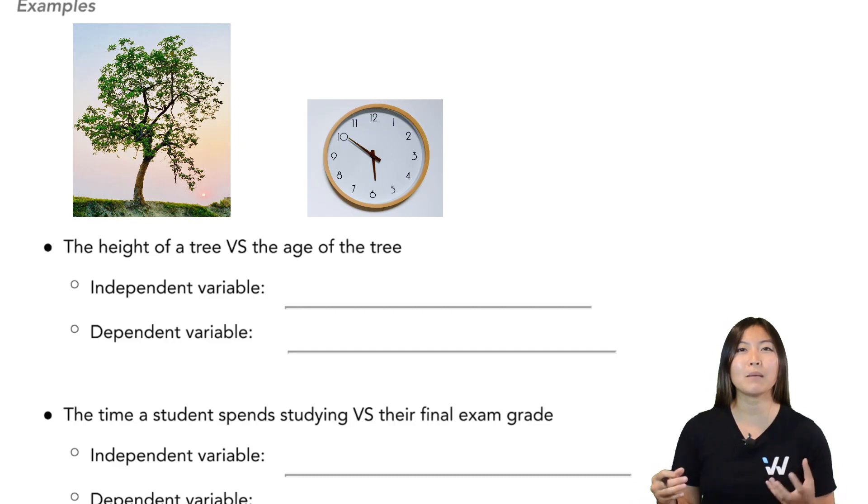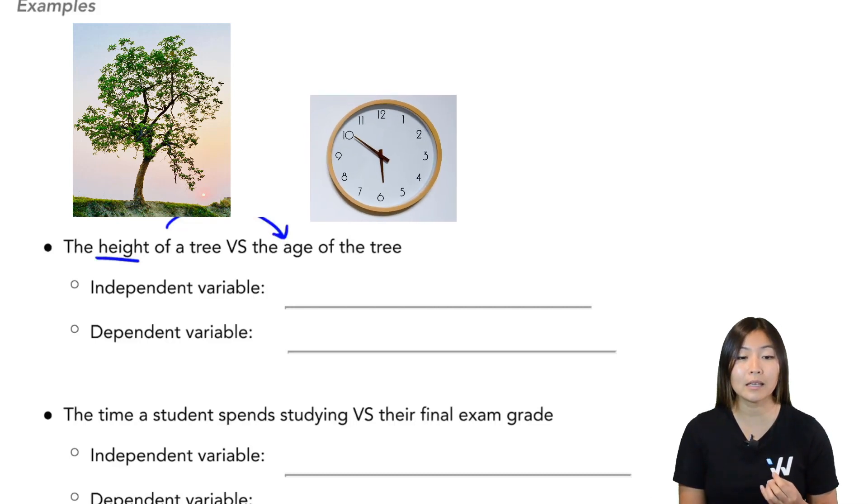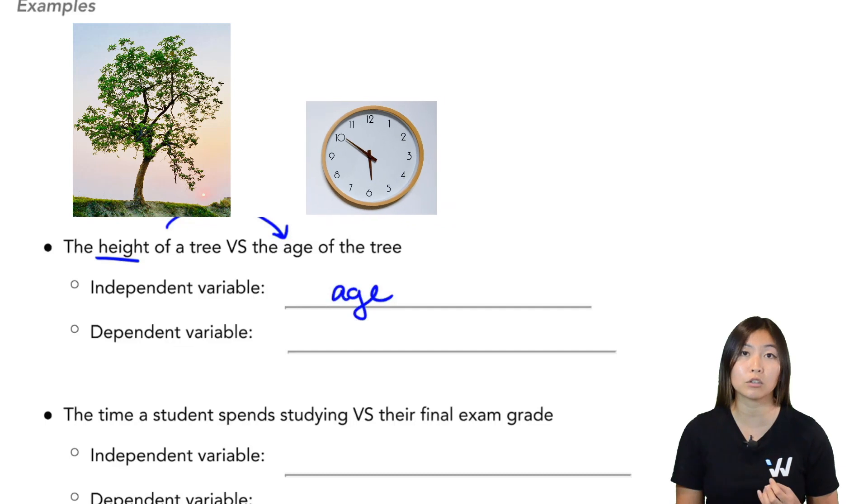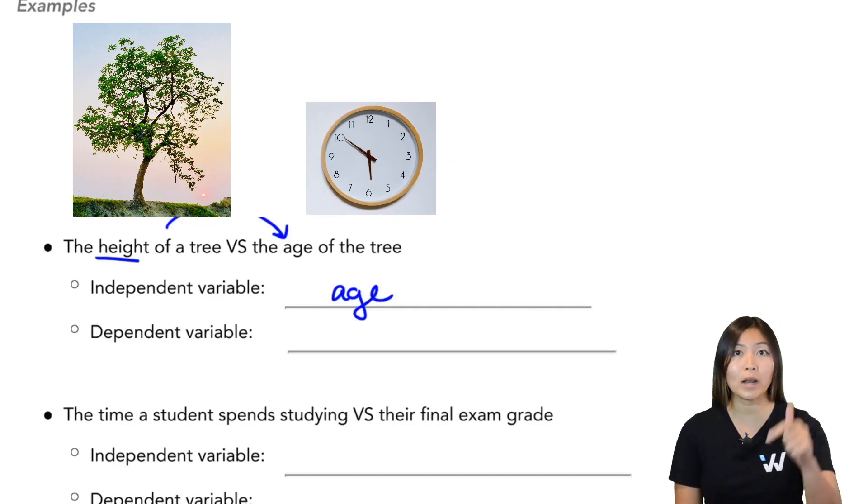Well, think about a baby, you can think of a tree or a baby or a puppy, anything that grows. The older they are, usually the taller they get, right? So the height actually depends on the age. So the independent variable here is going to be the age of the tree. We get to choose what age they're at.